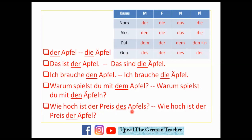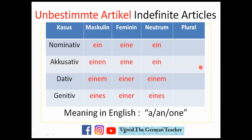For the genitive case, the example is about the price: 'Wie hoch ist der Preis?' — how high is the price? For a single apple: 'der Preis des Apfels'; for plural apples: 'Wie hoch ist der Preis der Äpfel?' — using 'der' for the genitive plural.